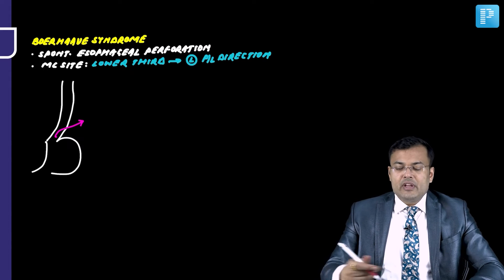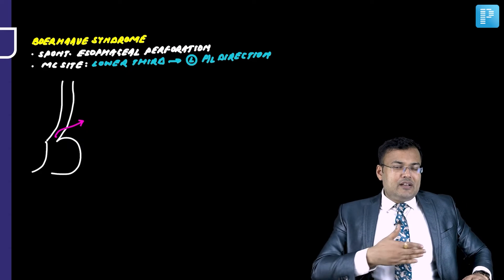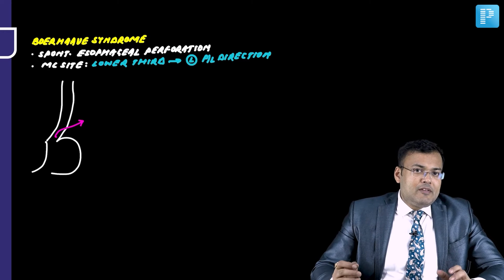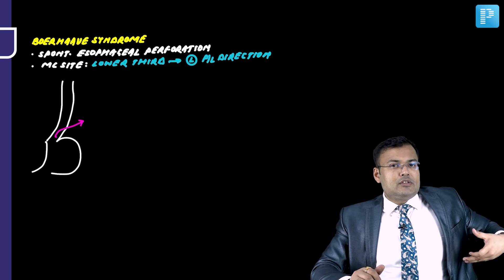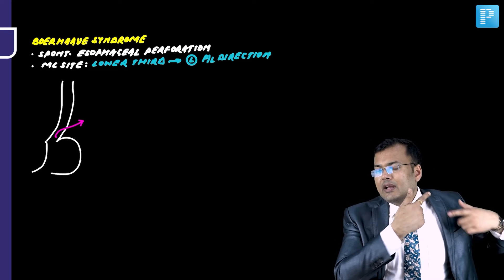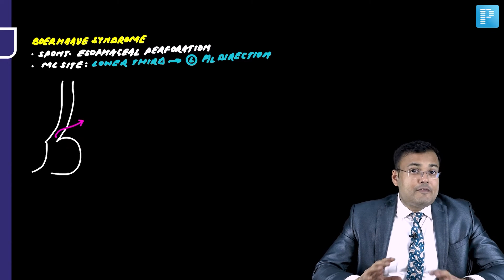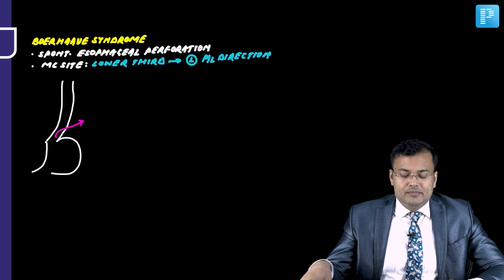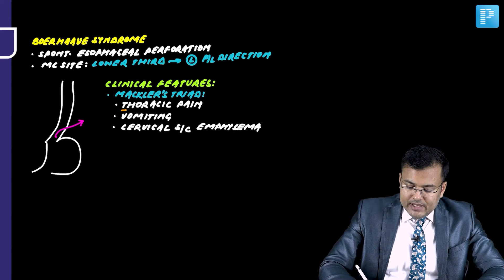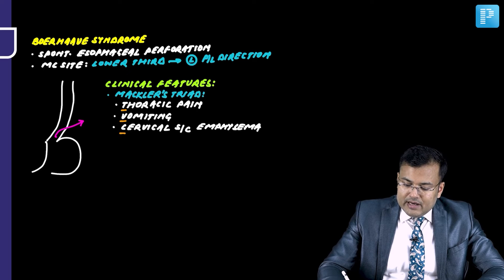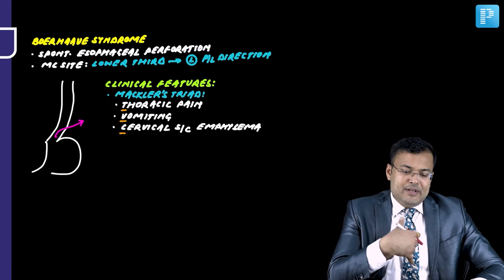The vomitus, which was supposed to come out, enters the mediastinum, causing severe mediastinitis. Because of this, the patient develops thoracic pain, vomiting, and cervical subcutaneous emphysema. This triad is called Mackler's triad, and it characterizes Boerhaave syndrome. These are the three components: thoracic pain, vomiting, and cervical subcutaneous emphysema.